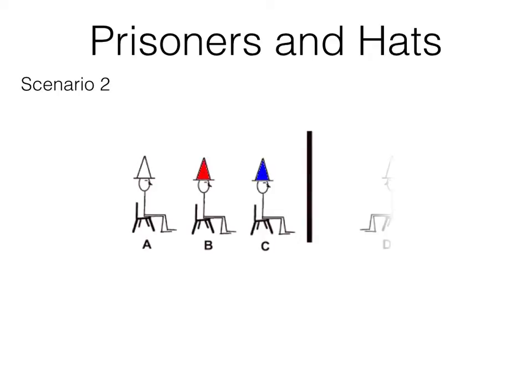A more interesting scenario is if the hats worn by prisoners B and C are of a different colour. Again, the order of the colours doesn't matter, but let's assume that prisoner B's hat is red and prisoner C's hat is blue.